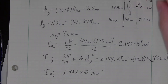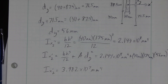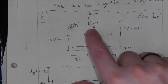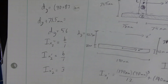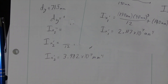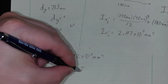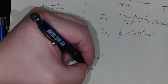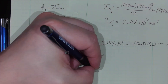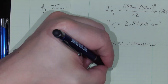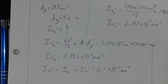This is the moment of inertia for shape two about the X prime axis. Now, the total moment of inertia of the whole shape about the X prime axis is the sum of the moments of inertia for both shapes combined. Adding them together, the total comes out to approximately 6.1 × 10⁷ mm⁴.